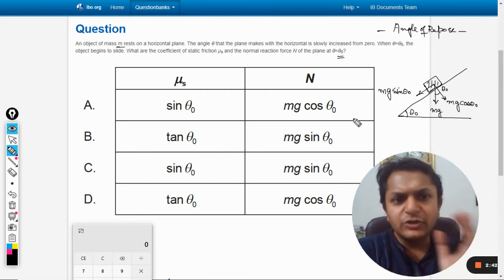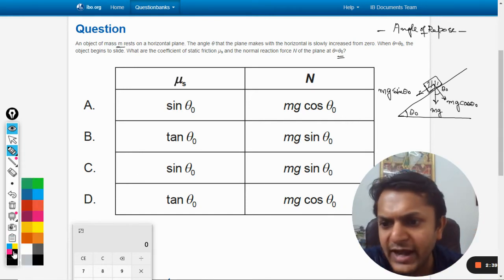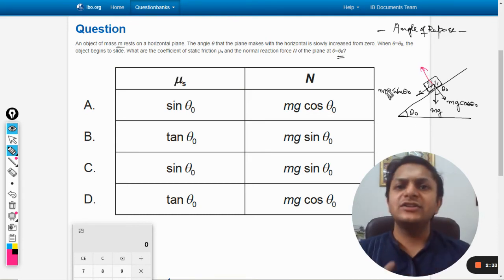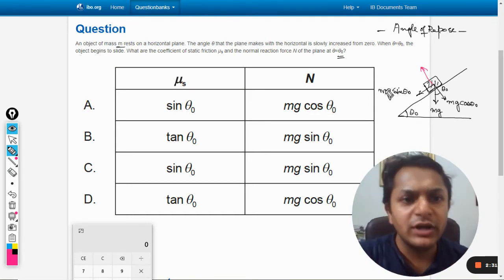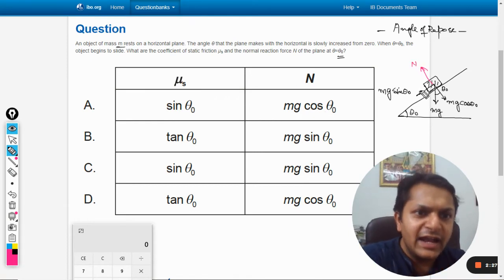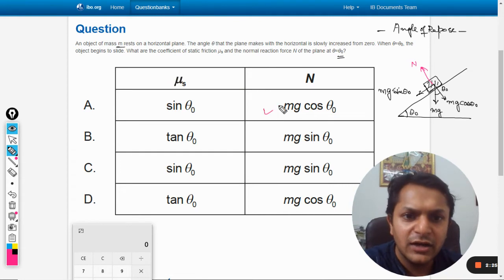These are the two components. Where will be the normal reaction? Normal reaction is normal to the surface, always perpendicular to the surface on which the body is present. This is the normal reaction, so we can always say that N equals mg cos theta naught.